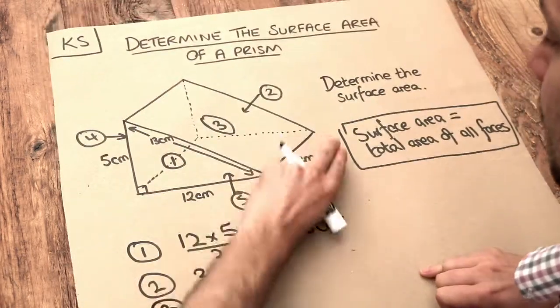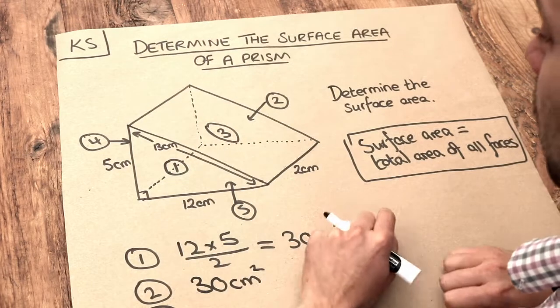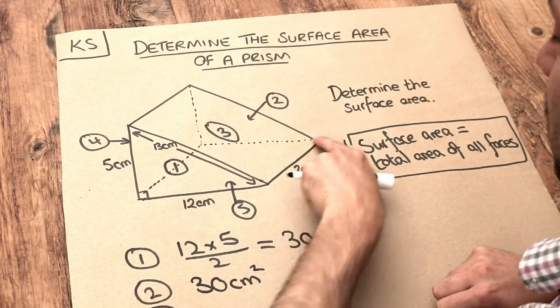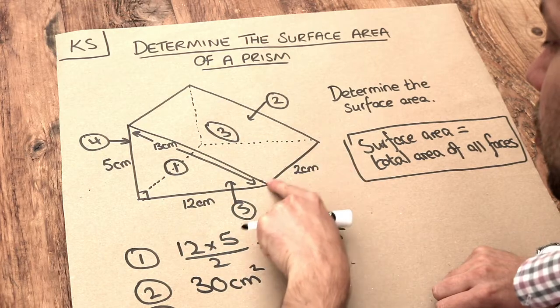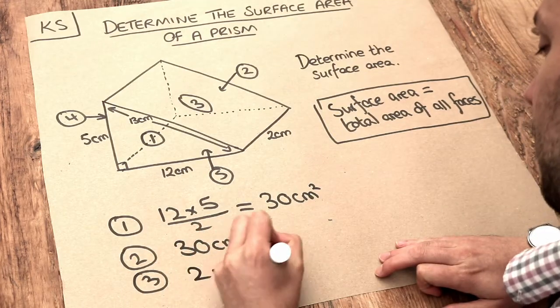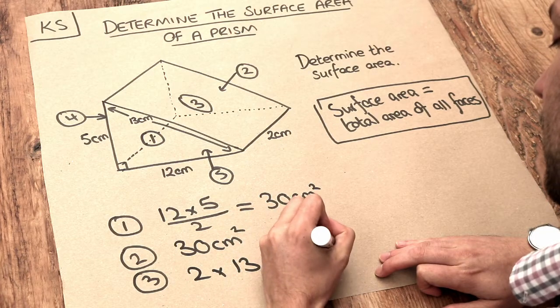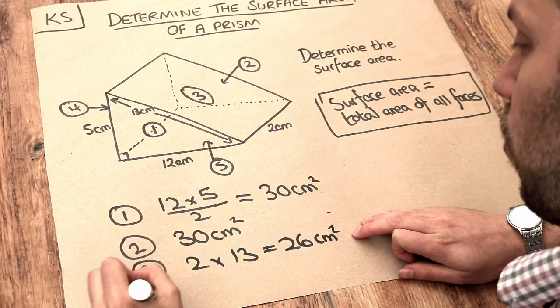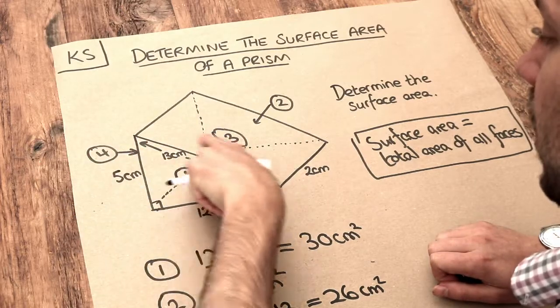What about face number three, this slopey face here? Well, it's just a rectangle so we can just do the width times the height. That's 2 multiplied by 13 and that equals 26 centimeters squared.